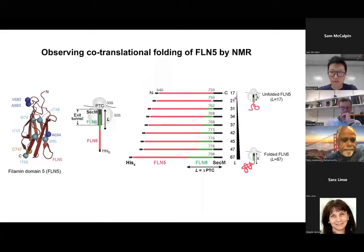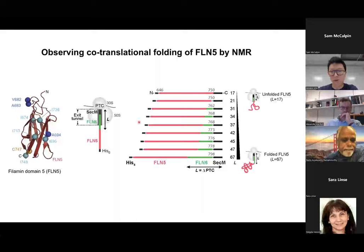If the linker length is shorter than 30, the C-terminal part of FLN5 will still be inside the tunnel, and FLN5 will not fold — it will be unfolded. As we increase the length, at a certain point the FLN5 sequence will be entirely out of the tunnel. When we increase length further, it'll be distant enough from the ribosome to fold. At longer linker lengths like 47 and 67, FLN5 folds into its native form. We monitored this using various NMR techniques with 15N and 13C labeled samples.